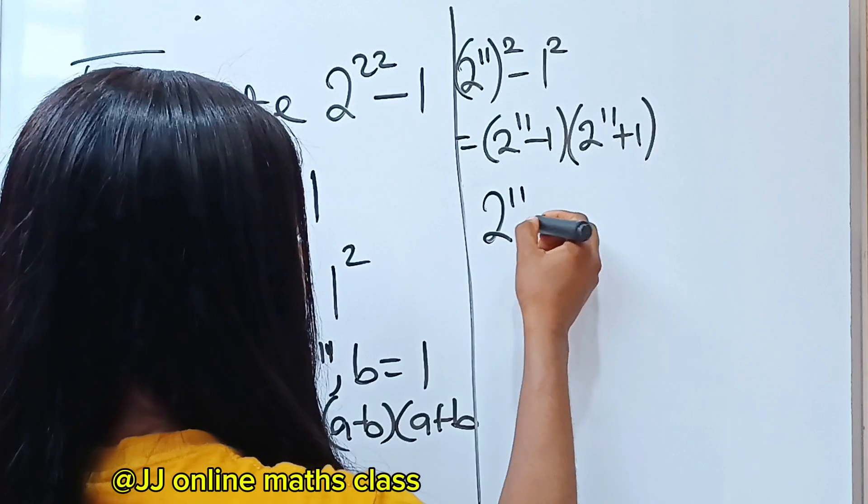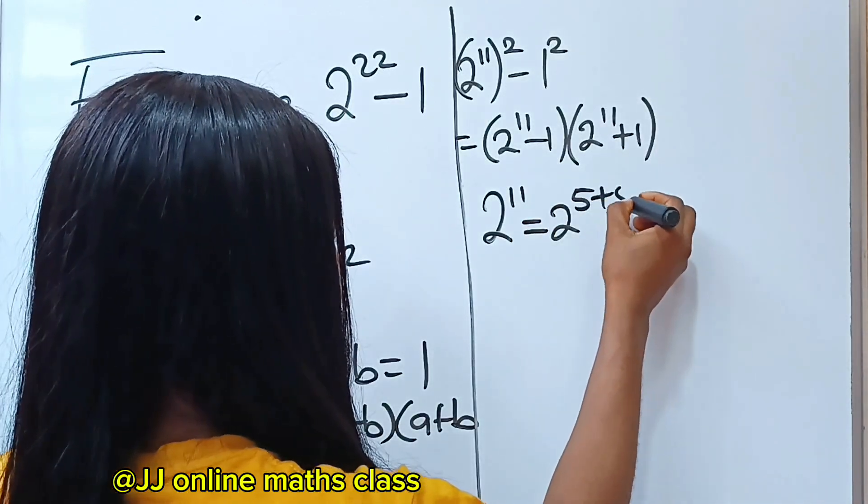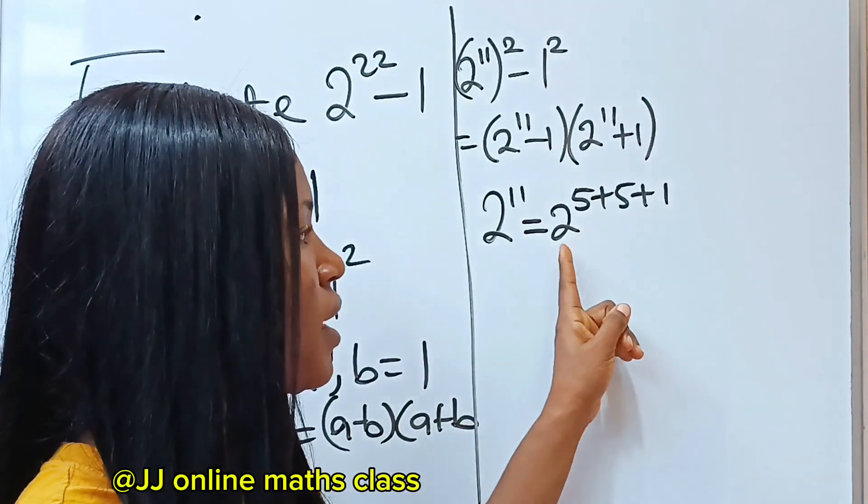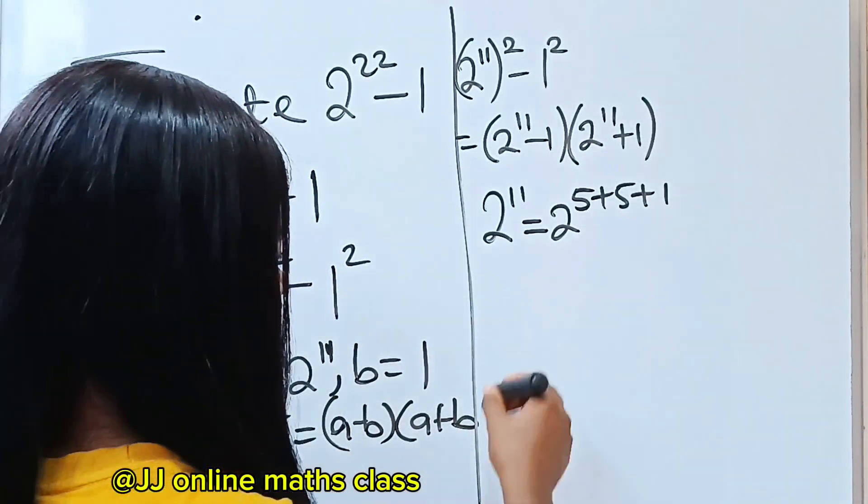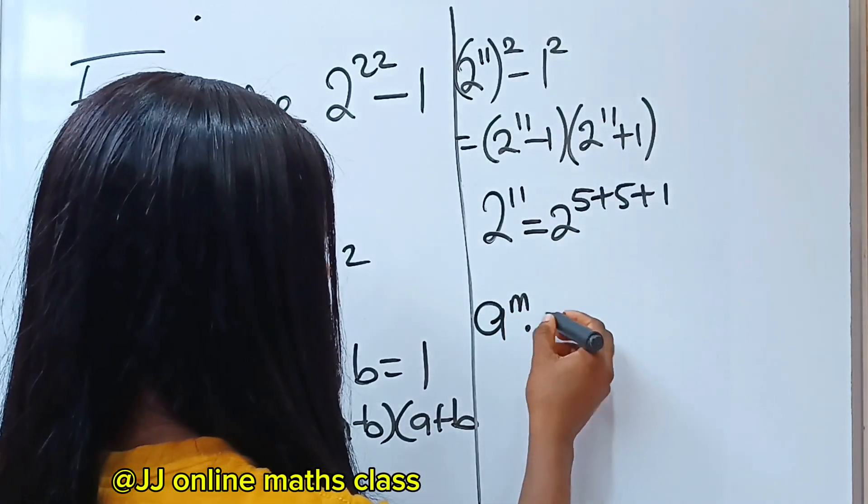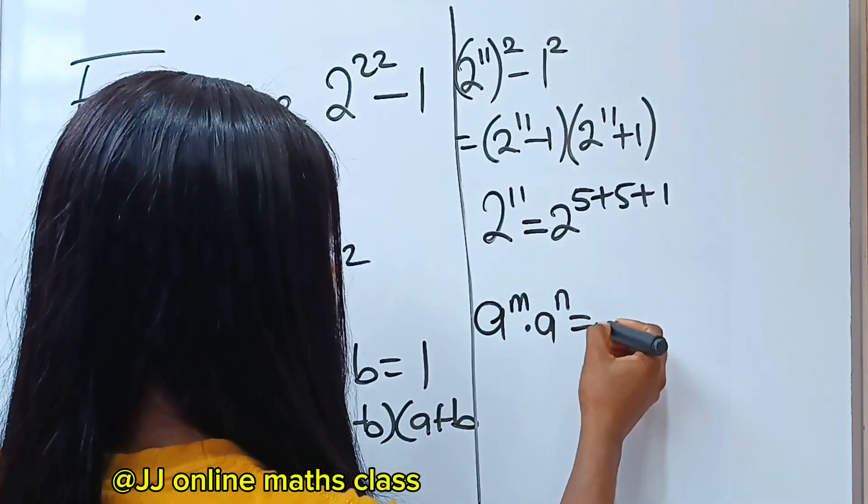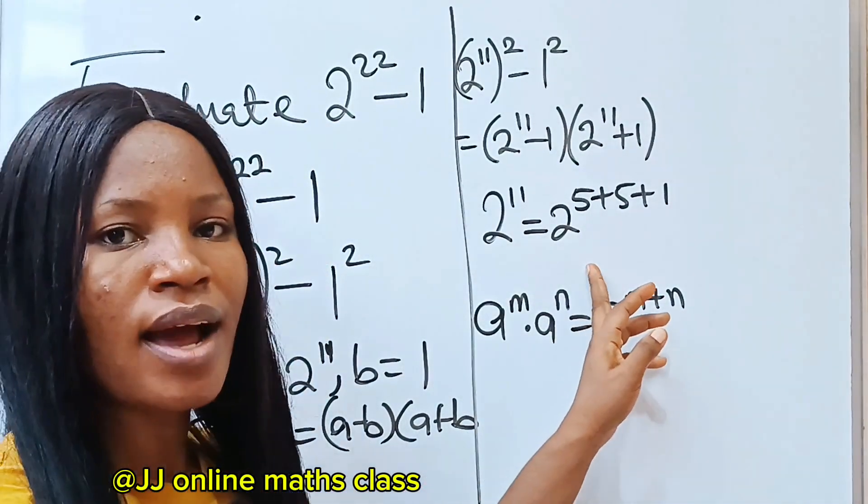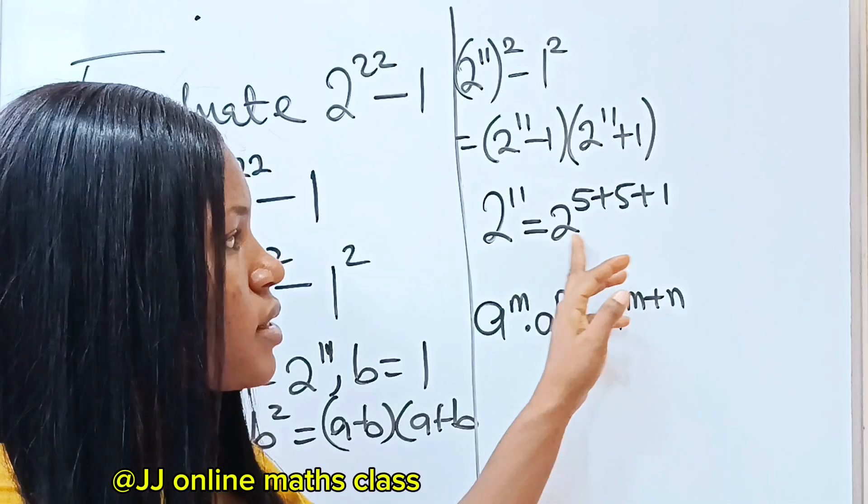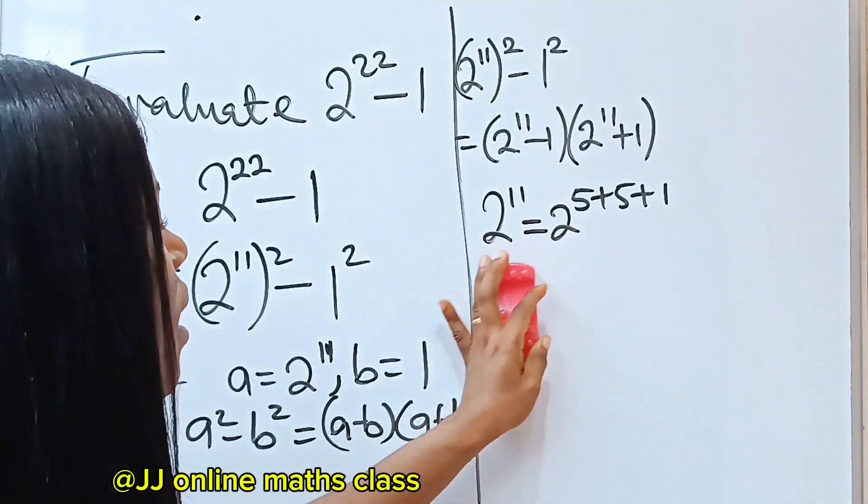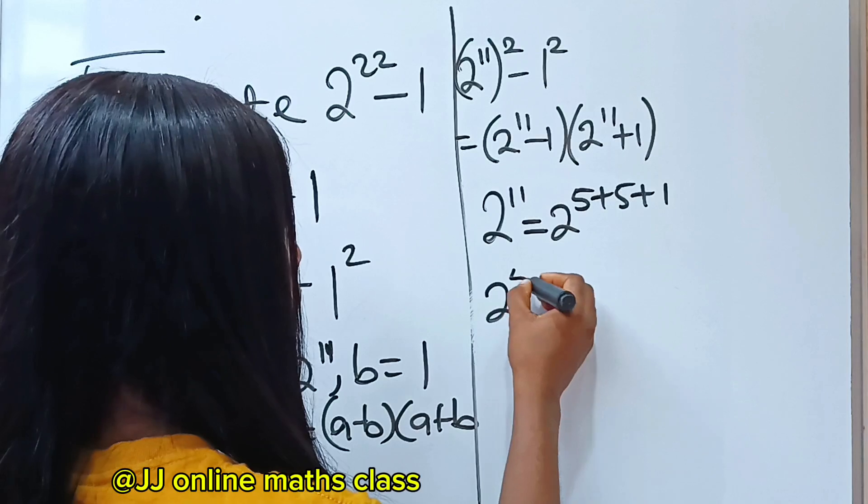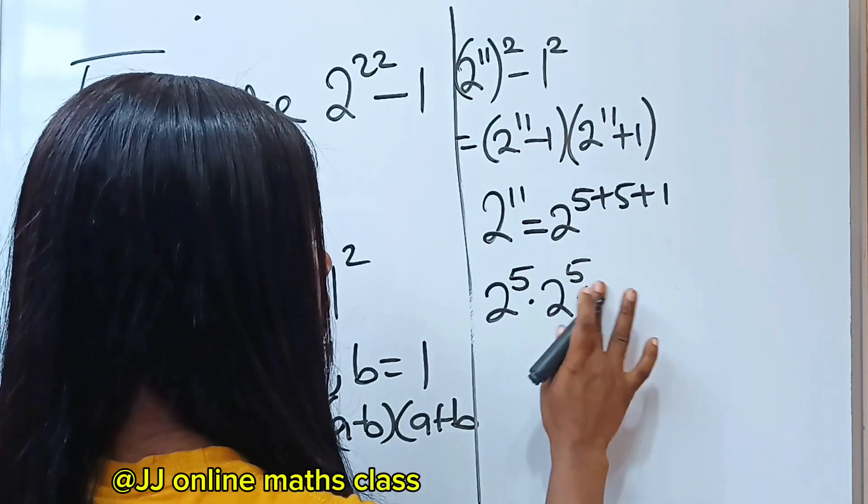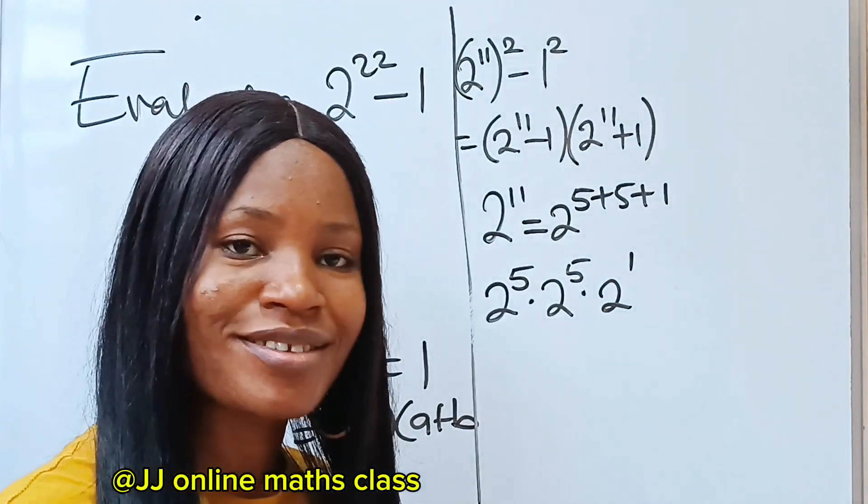2 to the power of 11 is the same thing as 2 to the power of 5 plus 5 plus 1. What does the law of indices or exponents say about something like this? It states that A to the power of M multiplied by A to the power of N is equal to A to the power of M plus N. That simply means that we can resolve this as 2 to the power of 5 multiplied by 2 to the power of 5 multiplied by 2 to the power of 1.